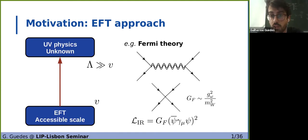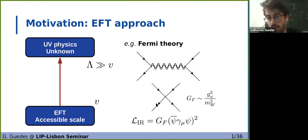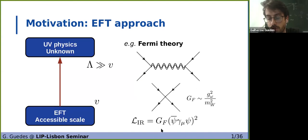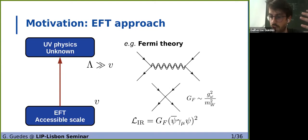One of the most famous examples of a successful effective field theory approach is the Fermi theory, in which even before knowing about the existence of electroweak gauge bosons, one could study the interaction of four fermions with a contact interaction described by a higher dimensional operator. It was very successful at describing, for example, the muon lifetime. However, as we went to higher energies, this description eventually breaks down since we are approaching new physics, and we understood that this interaction was actually being mediated by a heavy gauge boson which we were effectively integrating out. To fix the coefficient of this effective operator, we need to perform the matching procedure — at a certain scale, we require that the effective theory reproduces the results of the full theory, fixing the coefficient at that particular scale.